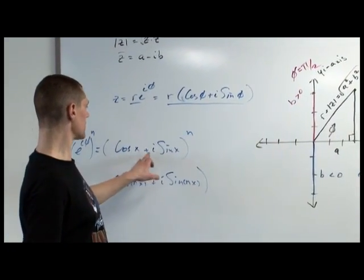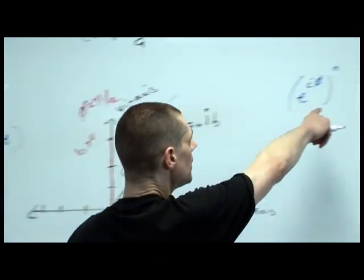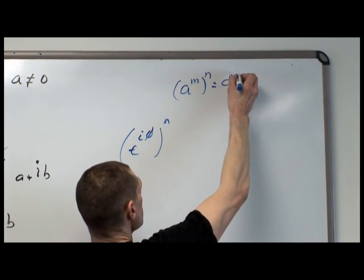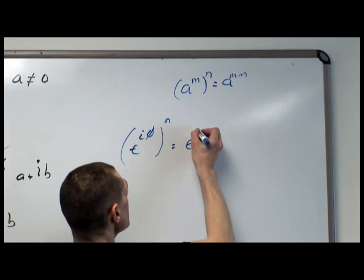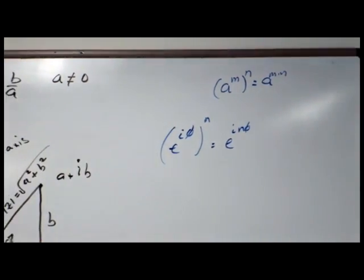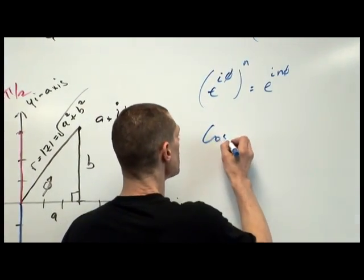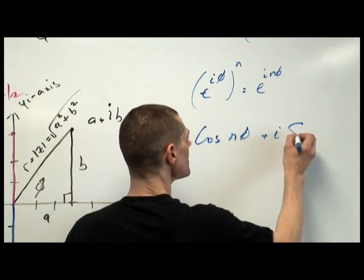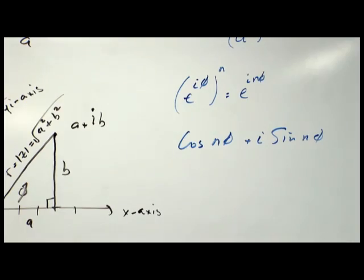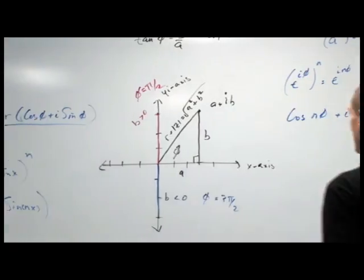So e to the i theta to the nth power is cosine x plus i sine x to the nth power. And let's look at this. Remember, a to the m to the n is a to the m times n, so this is e to the i n theta. This, by the construction of this that I showed a couple videos back, then will be cosine n theta plus i sine n theta.